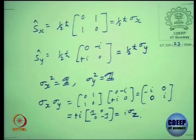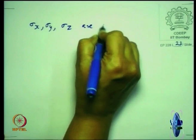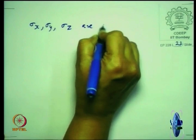So sigma_y is written as the matrix [[0, −i], [i, 0]]. The sigma_x, sigma_y, sigma_z matrices you will see in any textbook are called the Pauli matrices.